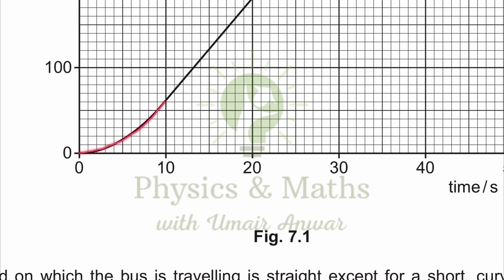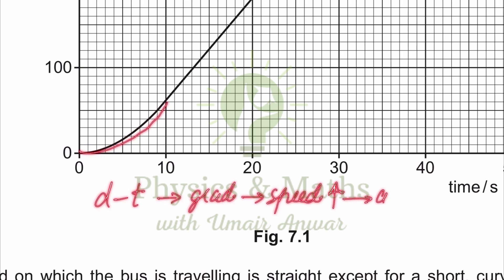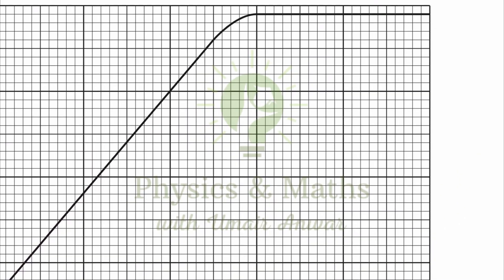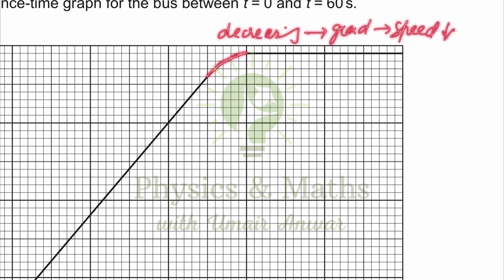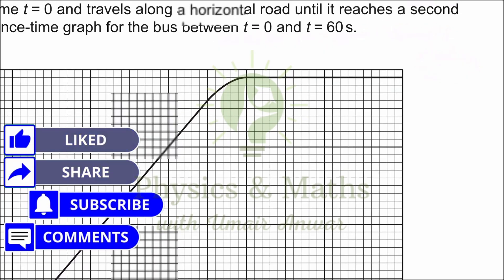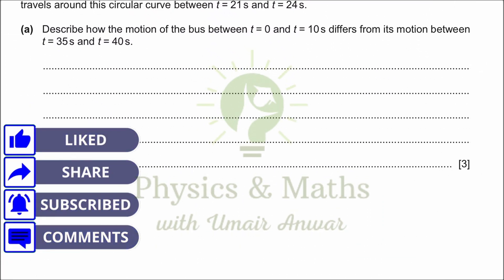We can see a curve with an increasing gradient. In a distance-time graph, the gradient represents the speed of the object, so an increasing gradient means speed is increasing, and when speed increases we have acceleration in the body — it is accelerated movement. Looking at the graph at t equals 35 to 40 seconds, it is again a curve but this time with a decreasing gradient, meaning speed is decreasing, and when speed is decreasing we have deceleration in the moving object.